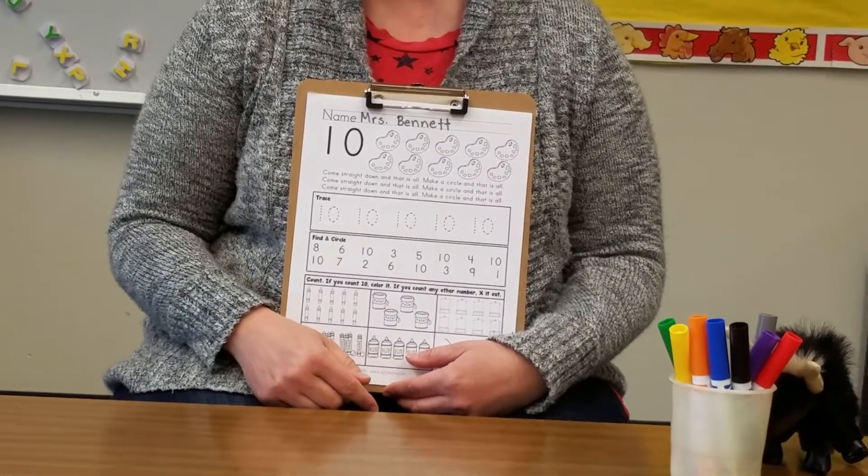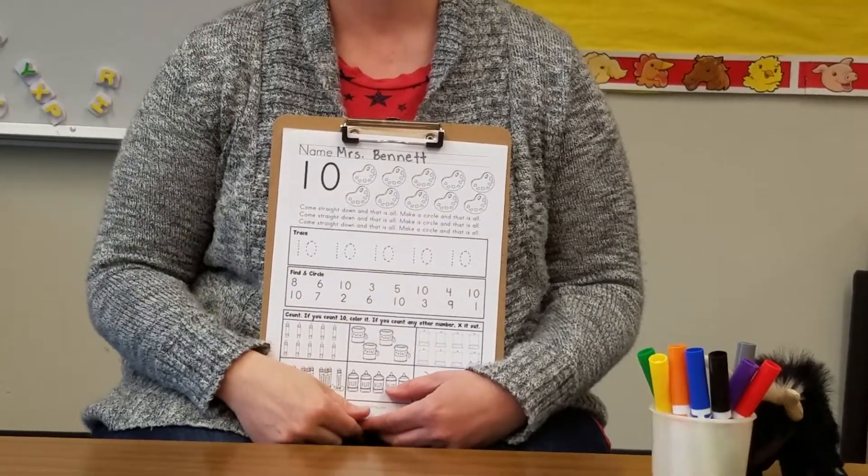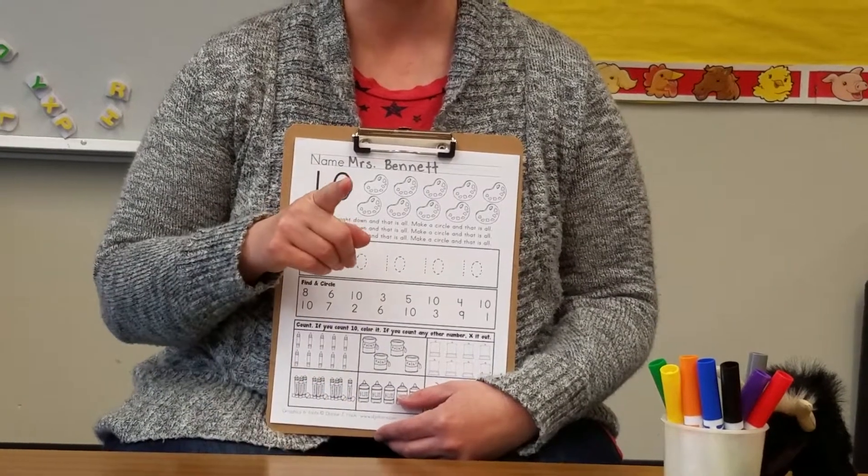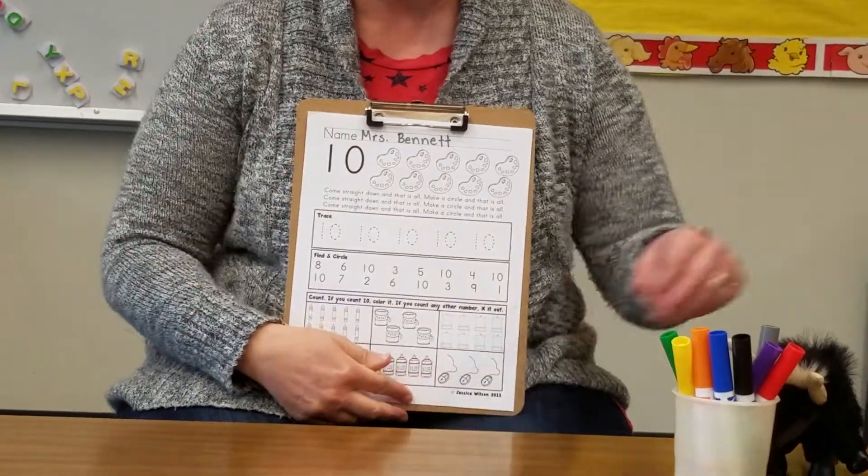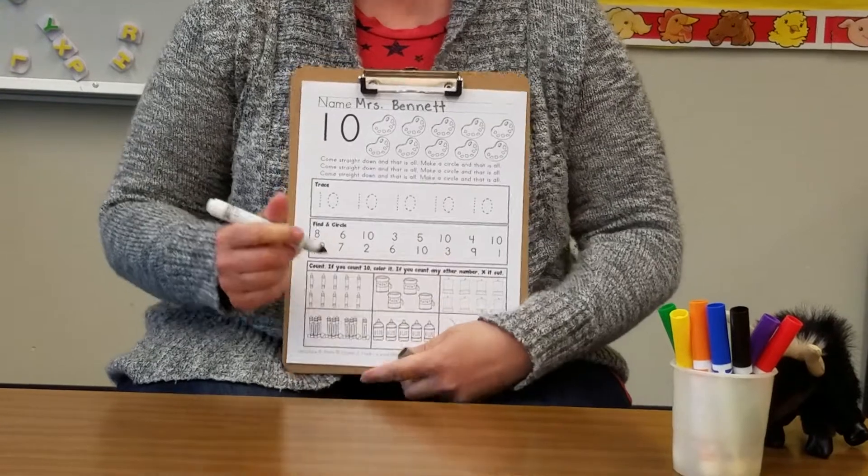You need to trace the number 10 on your paper three times. Once you've traced the number 10 on your paper with your finger three times now we're going to trace the number 10s down here. I'm going to use my gray marker and you're going to use your pencil. Here we go.